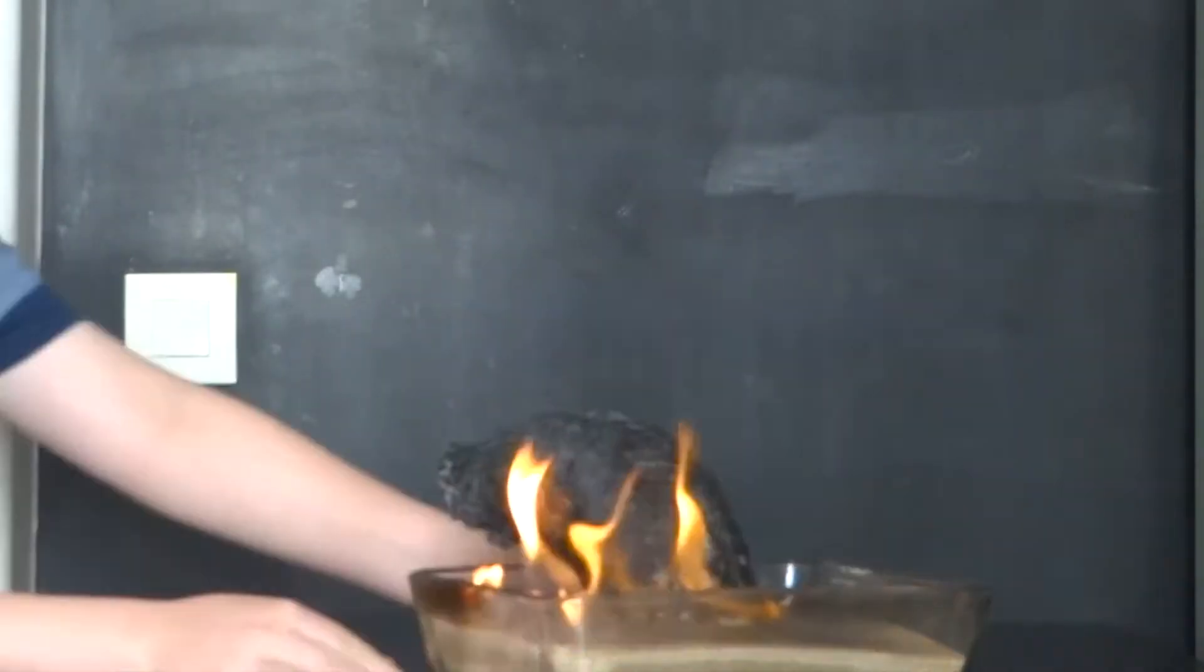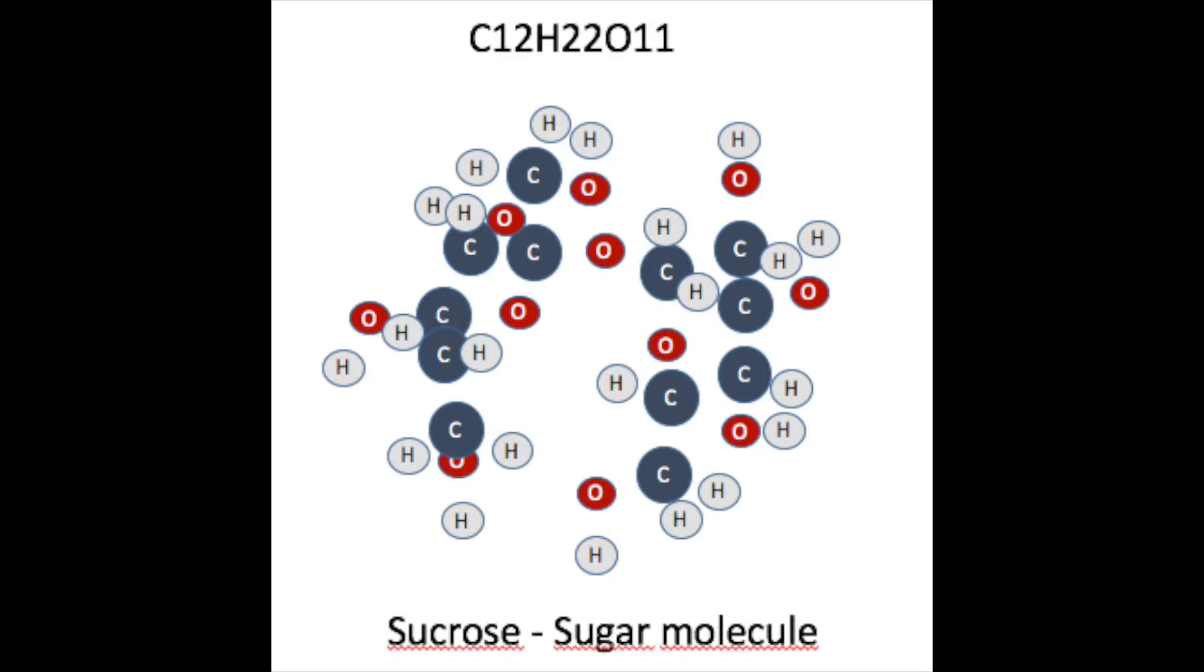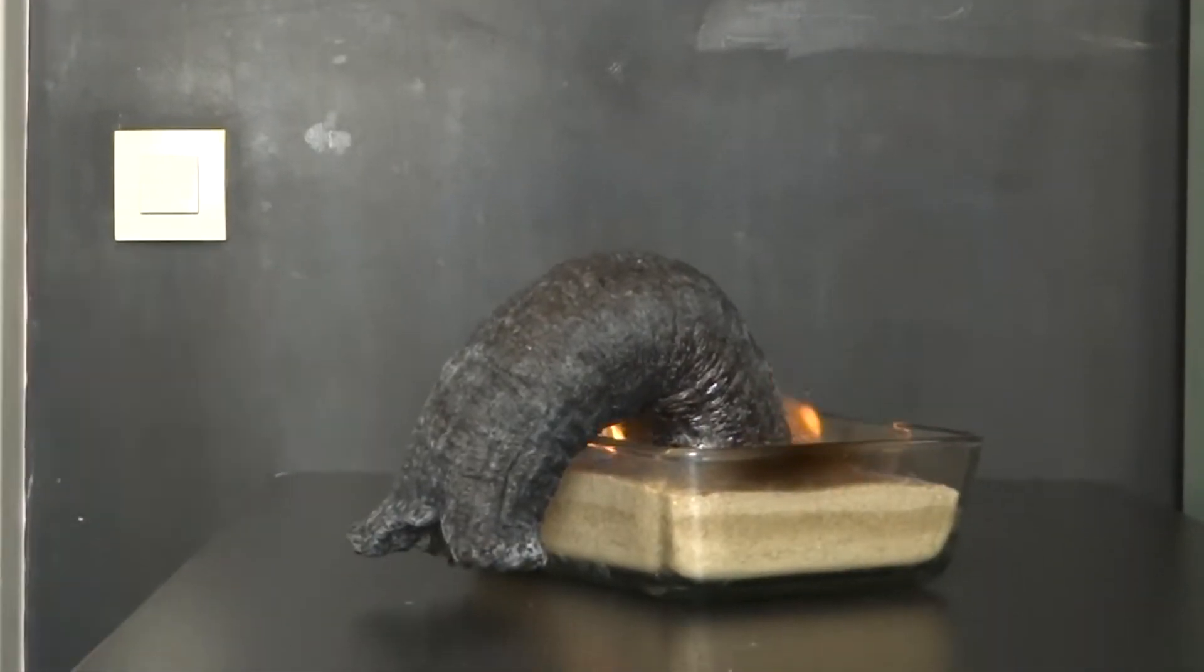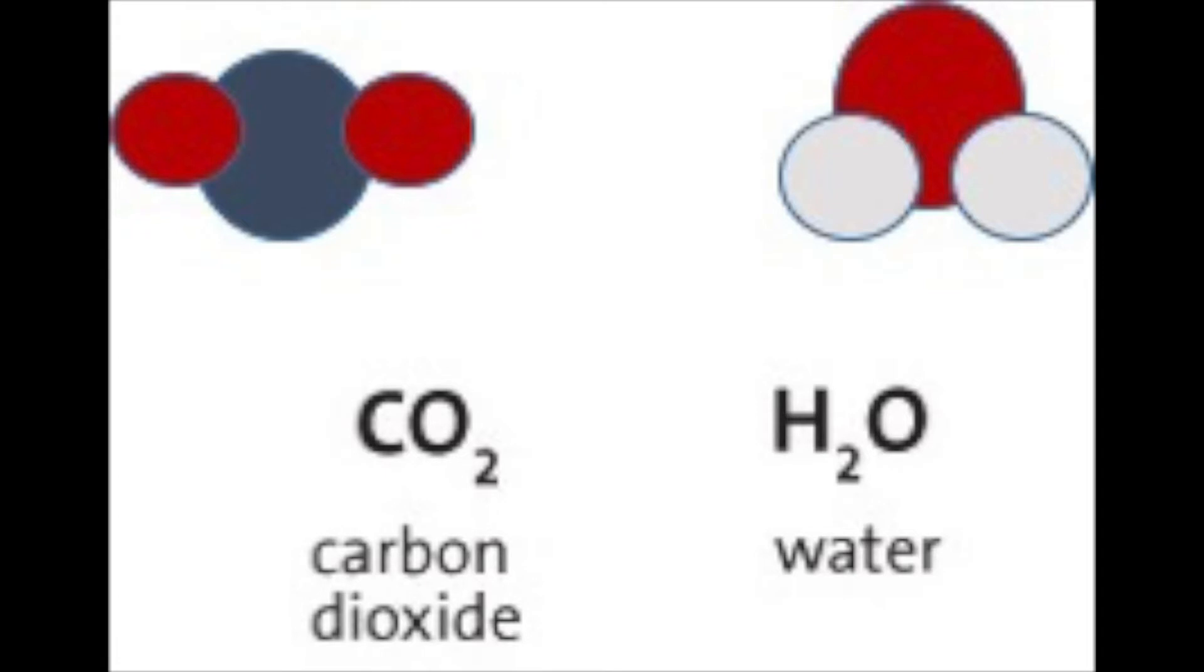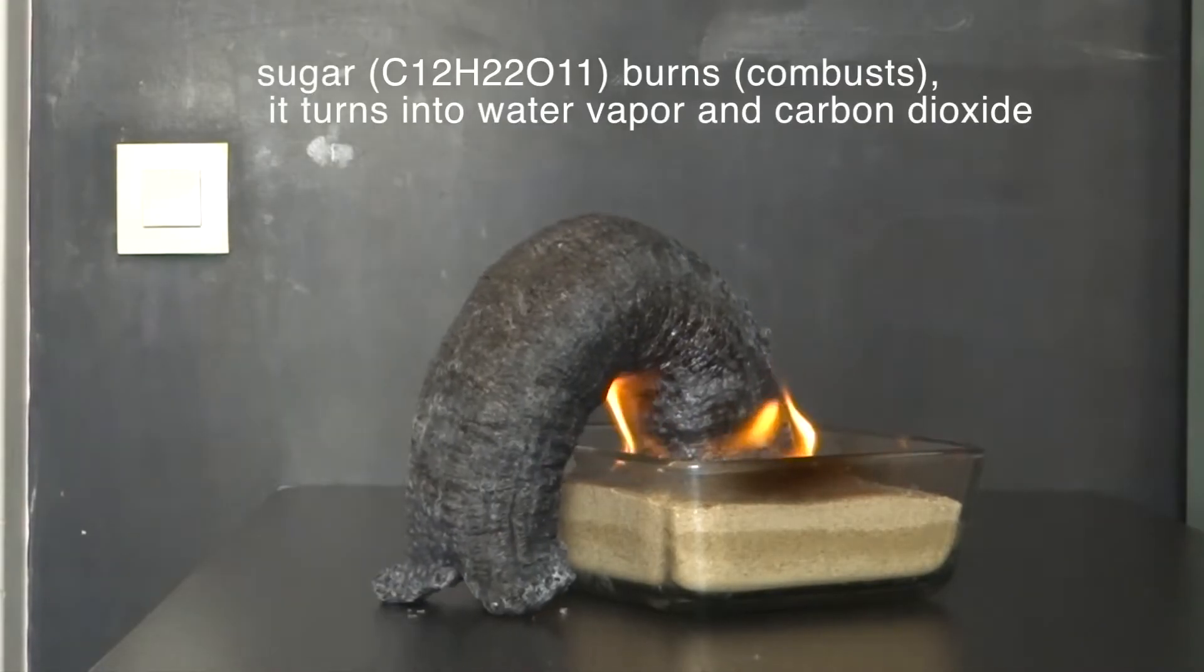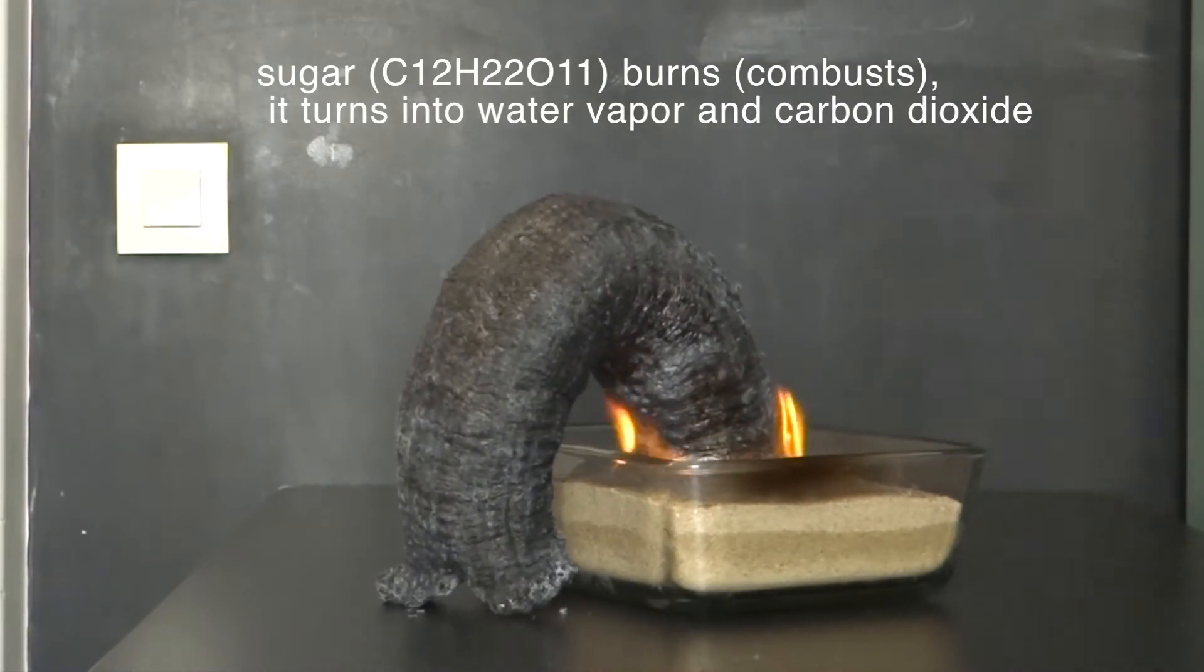The first of these reactions occurs when sugar burns in the presence of oxygen. This produces carbon dioxide gas and water vapor, which pushes more of the mixture of sugar and baking soda upwards.